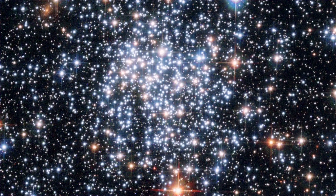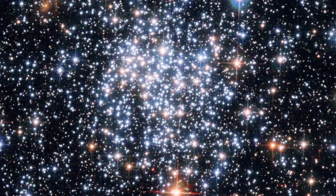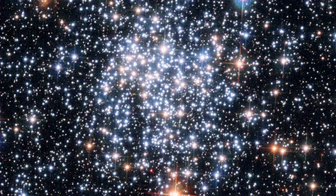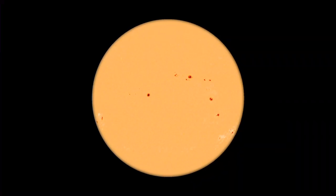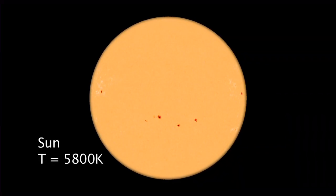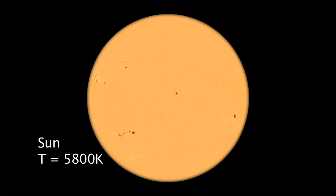The surface temperature is responsible for its color. Hotter means more blue, and colder means more red. The sun, with a medium temperature of 5,800 Kelvin, is mainly yellow.